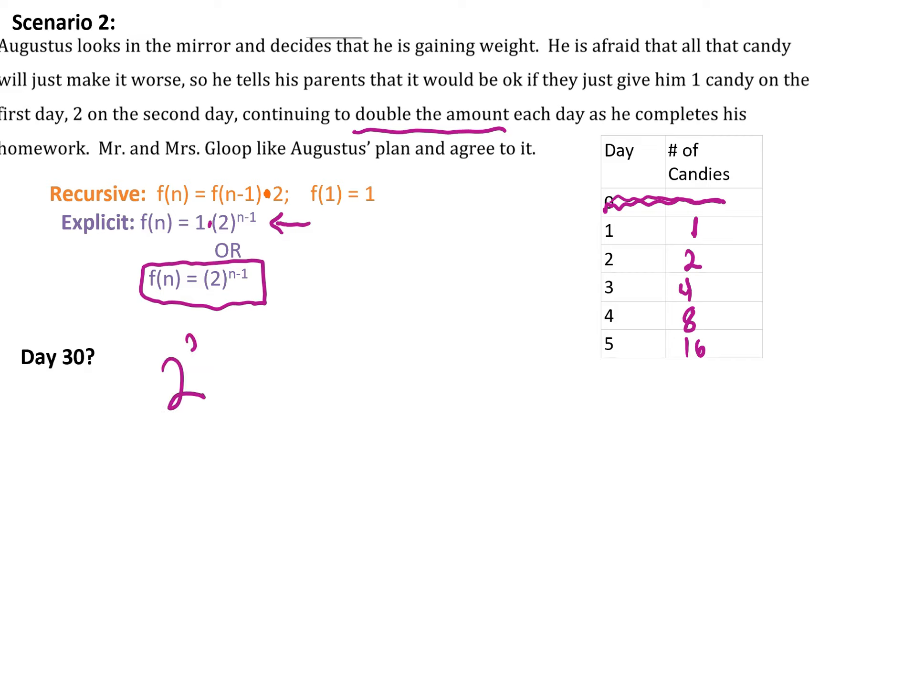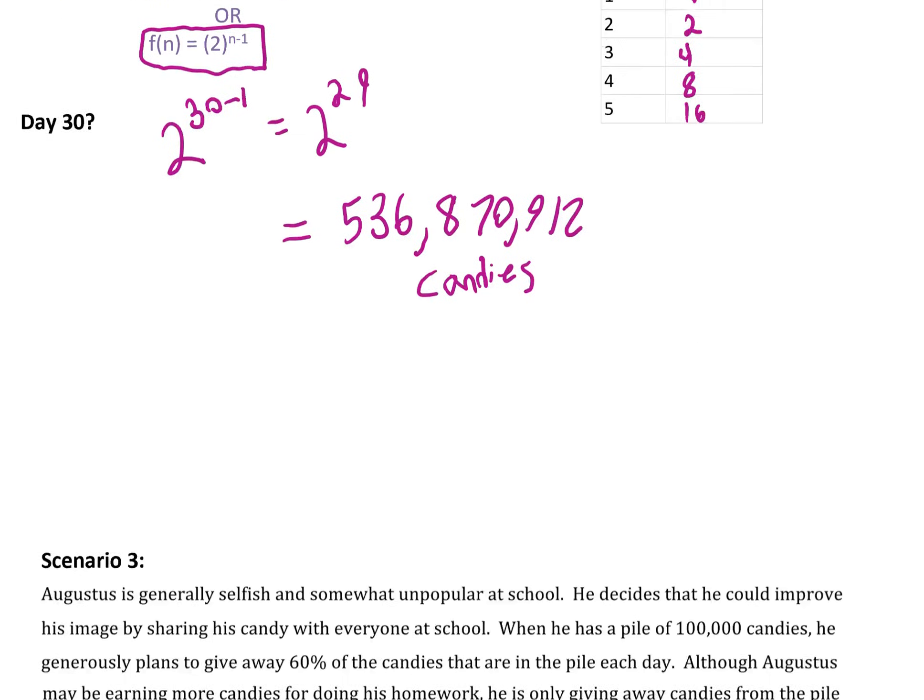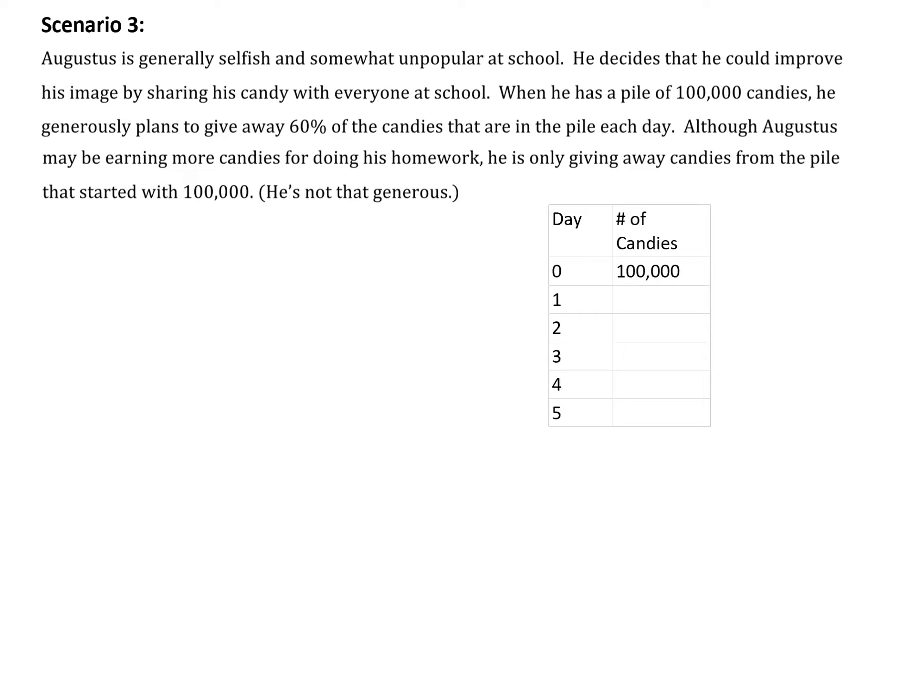So on day thirty, 2^(30-1), that's going to be 2^29, which is going to be a whole lot of candy. Let's just see how much that is: a whopping 536,870,912 candies. So Augustus's weight loss plan really not working out there. So you can see how geometric sequences grow much more rapidly than arithmetic sequences. That's one of the takeaways you're meant to get from scenario one and two.